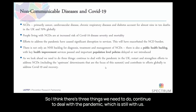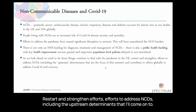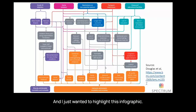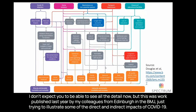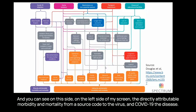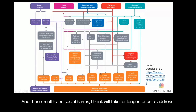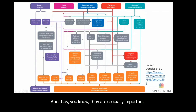There are three things we need to do: continue to deal with the pandemic; restart and strengthen efforts to address NCDs including upstream determinants; and contribute to global COVID-19 recovery efforts. Work published last year by Edinburgh colleagues in the BMJ illustrated both direct and indirect impacts of COVID-19 — the directly attributable morbidity and mortality from SARS-CoV-2 on one side, and all the indirect health harms accumulated through people's experiences on the other, which will take far longer to address.